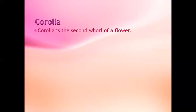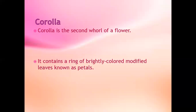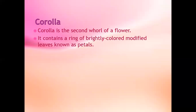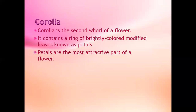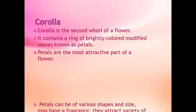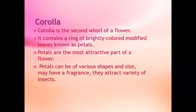Corolla. Corolla is the second wall of a flower. It contains a ring of brightly colored modified leaves known as petals. Petals are the most attractive part of a flower. Petals can be of various shapes and sizes and may have a fragrance. They attract a variety of insects.